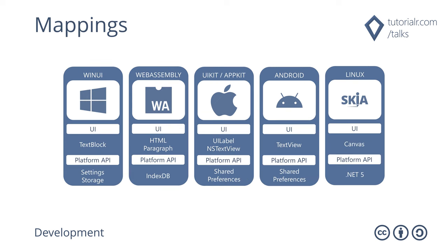Mappings for Uno Platform allow you to use the Universal Windows Platform APIs to map to native controls and APIs on each platform, implemented using platform-specific APIs. For example, a TextBlock on WinUI becomes an HTML paragraph on WebAssembly, a UI label on iOS, NS text view on macOS, text view on Android, and Canvas with Skia on Linux.